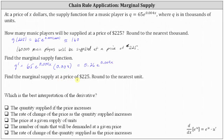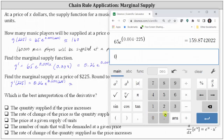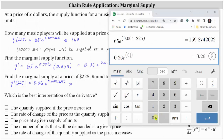Next we're asked to find the marginal supply at a price of 225 dollars, rounded to the nearest unit. To find this, we evaluate the marginal supply function at x equals 225. So q prime(225) equals 0.26 times e raised to the power of 0.004 times 225. Because we're told to round to the nearest unit and q is in thousands, we round q prime(225) to three decimal places, giving us 0.639.